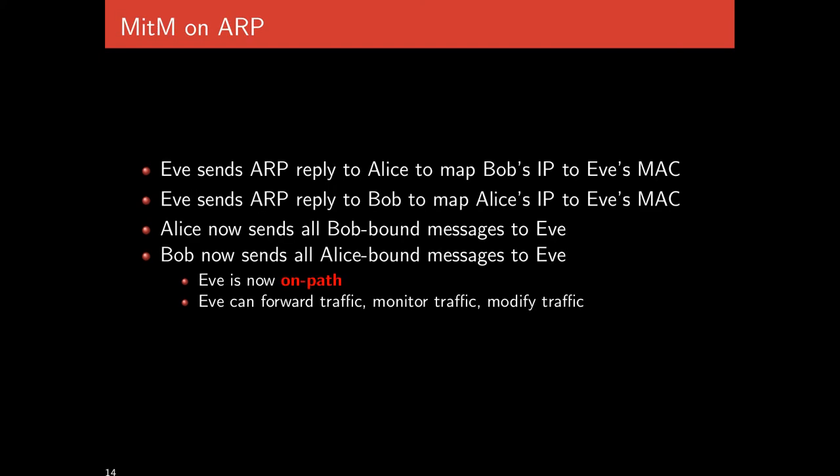The basic principle of a man-in-the-middle attack is that Eve sends fake ARP replies to both Alice and Bob: Eve tells Alice that Bob's IP is Eve's MAC, and tells Bob that Alice's IP is Eve's MAC. Now whenever Alice wants to talk to Bob, she sends traffic to Eve's computer thinking it's Bob, and when Bob replies, he sends it to what he thinks is Alice but is actually Eve. Eve has positioned herself directly between Alice and Bob, and can forward, monitor, modify, or delete traffic.